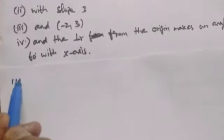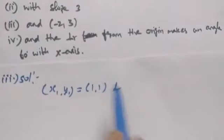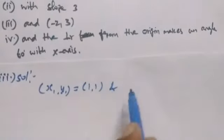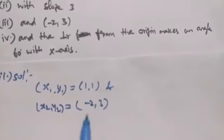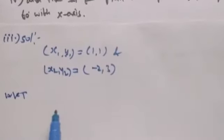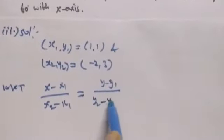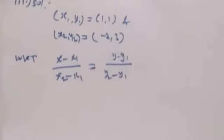Next, part 3. Given one point (1,1) and another point x2, y2 equal to (-2,3). By two-point form, the equation of the straight line is (x minus x1)/(x2 minus x1) equals (y minus y1)/(y2 minus y1).